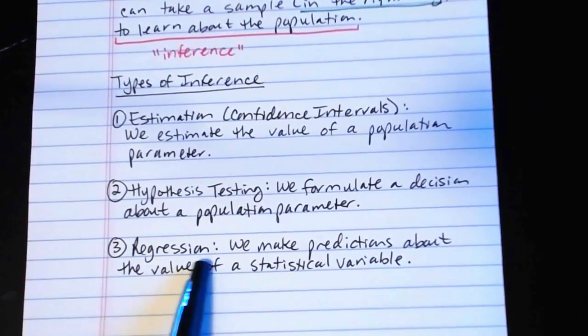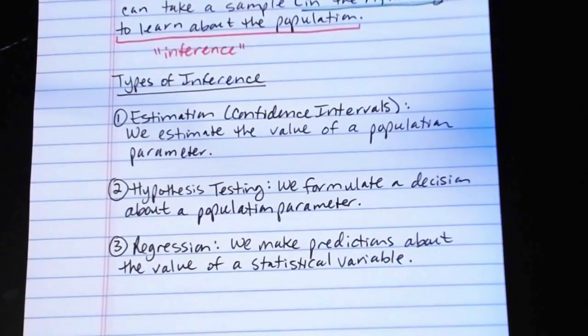This third type, regression, we're going to make predictions about the value of a statistical variable. So there I might wonder, what is the president's approval rating likely to be in three months? And so again, I would take some sample data, and I would extrapolate that sample data to figure out, okay, what's a likely value in three months? What would I expect for the president's approval rating? So those are the differences between the three types of inference that we're going to be covering for the rest of the course.